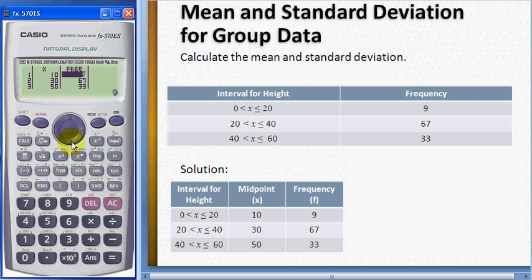So your data is 10 with the frequency 9, 30 and 67, and 50 and 33.